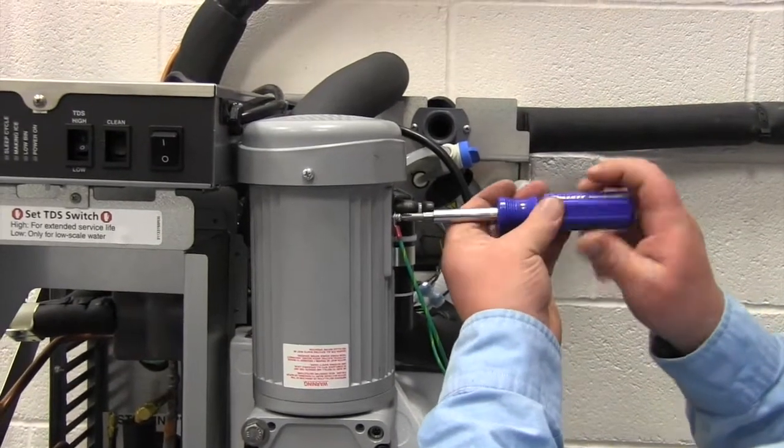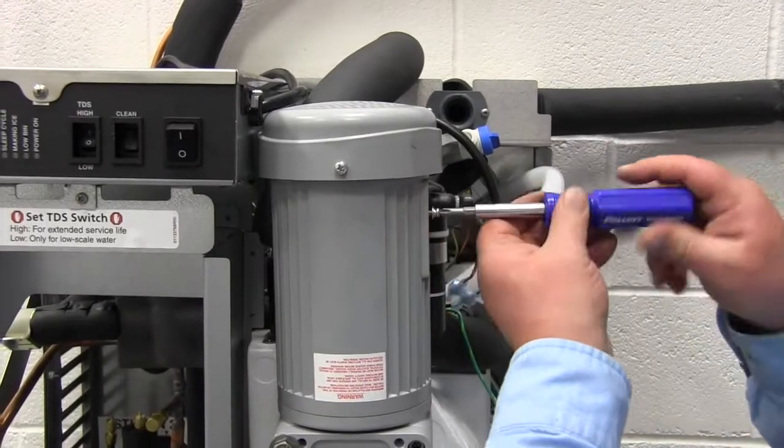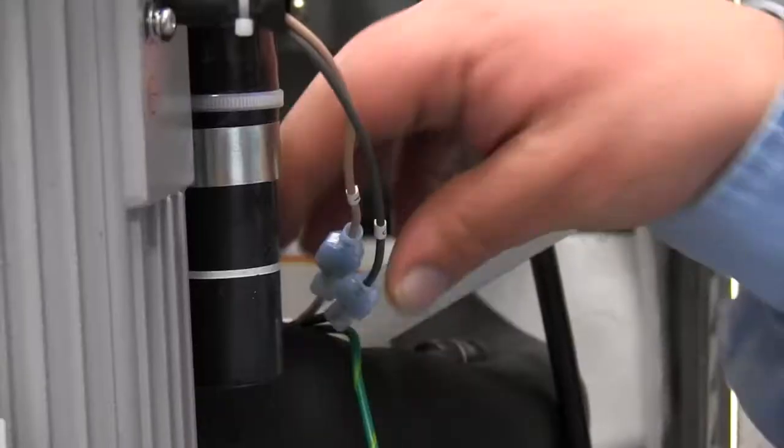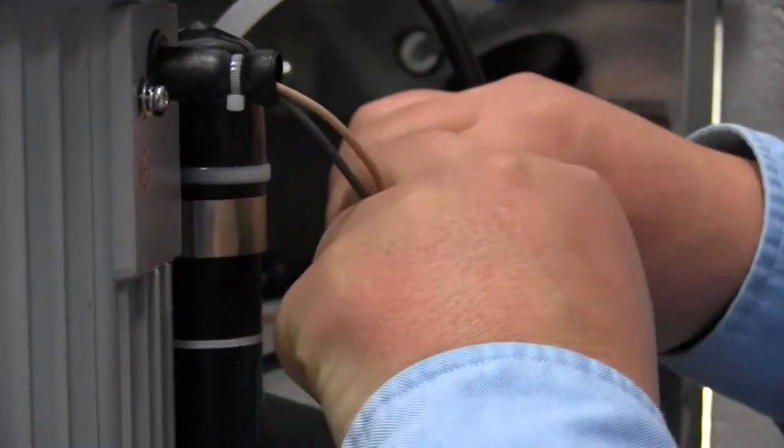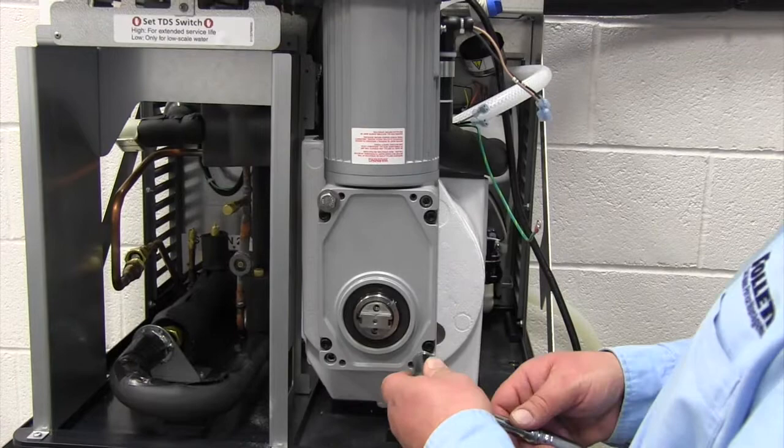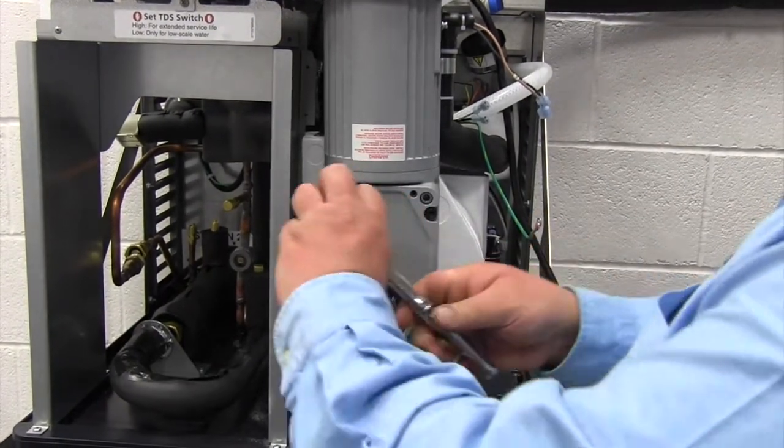Remove the Phillips head screw on the side of the gear motor that holds the ground wire in place. Put the screw back in place so you don't lose it. Now we're disconnecting the two wires that go to the gear motor. We're going to remove the two nine sixteenths hex head bolts that hold the gear motor in place.